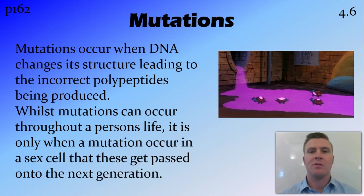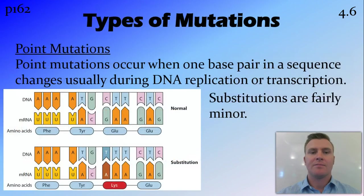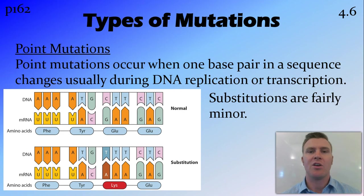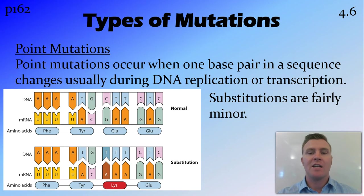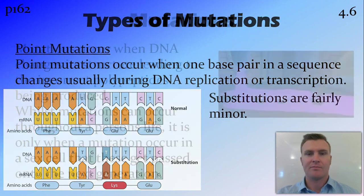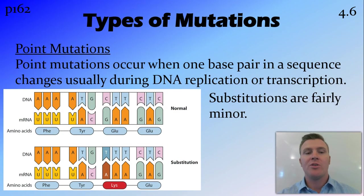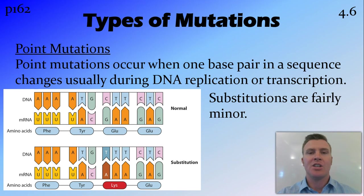There are a few different types of mutations. The first ones are point mutations. Point mutations occur when one nucleotide is changed for another — this causes a substitution. They can occur either during DNA replication or transcription, and occur when one base pair is changed.